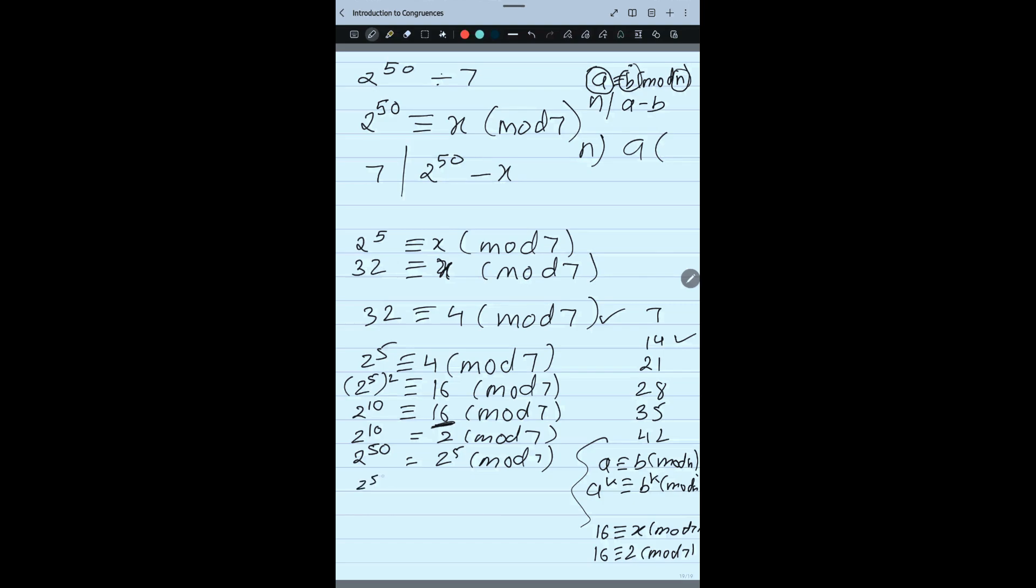Now 2 to the power 50 congruent, now here 2 to the power 5 is what? 2 to the power 5 is nothing but 32 mod 7. Again 32 is a big number, so I will use the same concept and I will reduce.